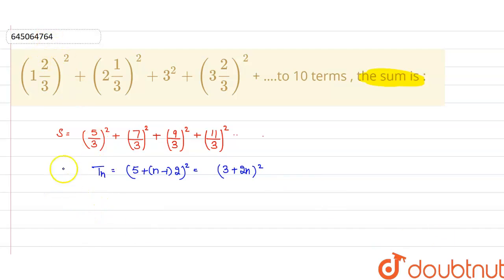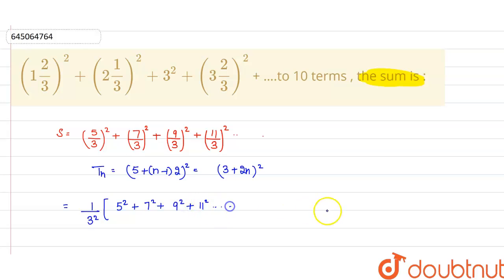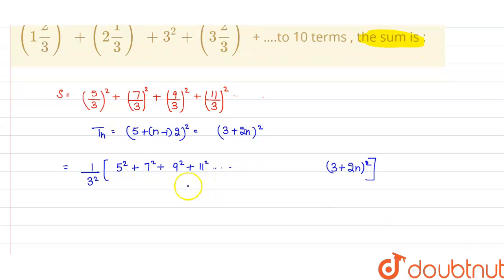If I take 1 by 3 squared common, the series becomes: 5 squared plus 7 squared plus 9 squared plus 11 squared, up to Tₙ squared. And Tₙ squared is (3 + 2n) whole squared. Now we have to find the sum of this term up to 10 terms.